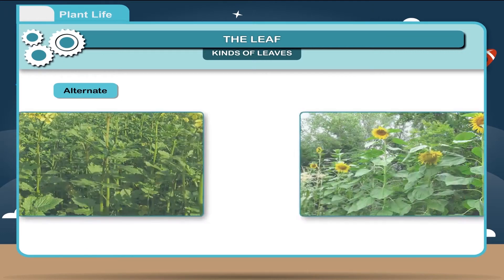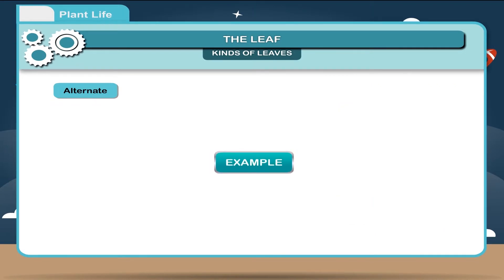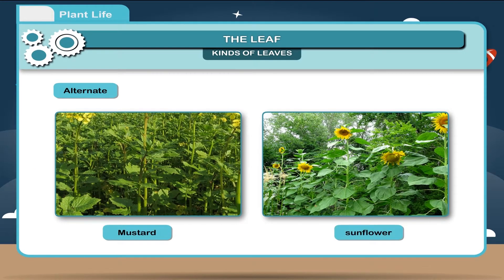Alternate. When one leaf is present at a node that is opposite to the previous leaf. The leaves are arranged at definite gap around the stem. Example, mustard, sunflower.